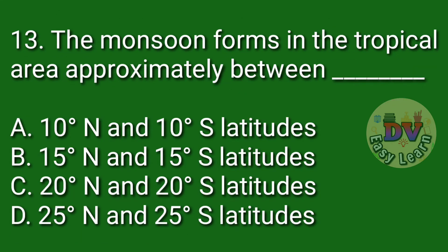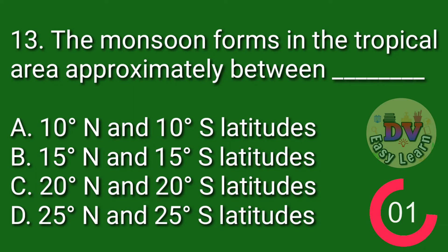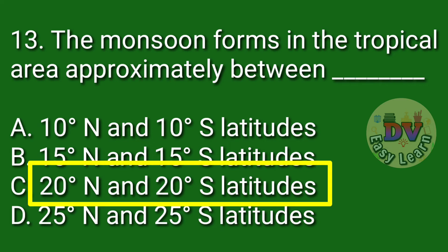Question number 13. The monsoon forms in the tropical area approximately between — Correct answer: 20 degrees North and 20 degrees South latitudes.